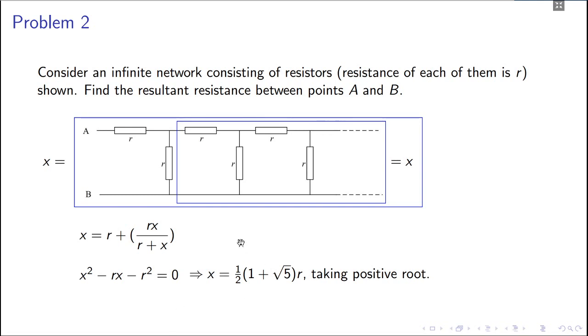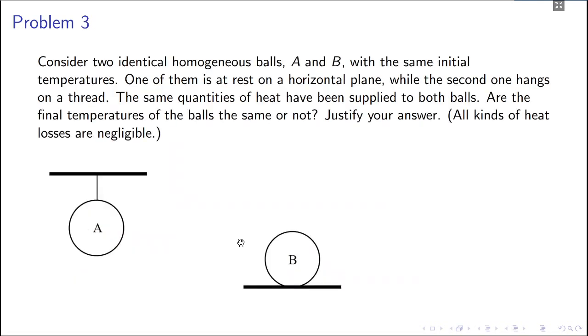This is problem three. This one is slightly complicated, I'll just explain. There are two balls, one is hanging from a wall, one is just sitting on some floor. They are identical and the same quantity of heat is supplied to both the balls. Then it asks you about the final temperature of the balls, are they the same, are they not? From first look it might appear that it's the same, but of course if you just give a heat Q, then what will happen? Let's say the initial temperature is T0, and then you give a heat Q to both of them.